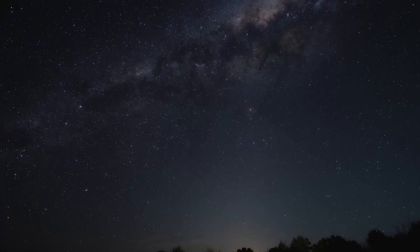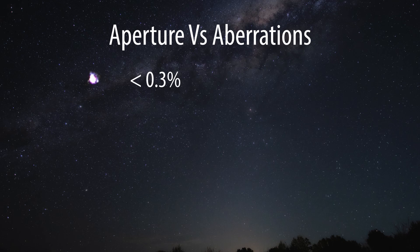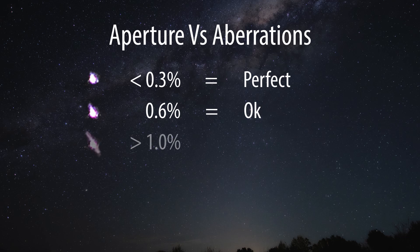How much light you let in through your aperture versus how bad you want your aberrations to be is a personal choice. But as a general guide, anything less than 0.3% is considered perfect. Around 0.6% is still good enough. And anything over 1% is considered really, really bad.